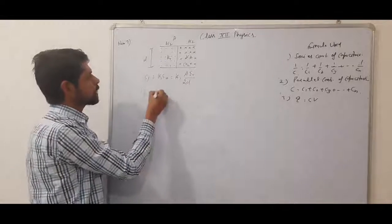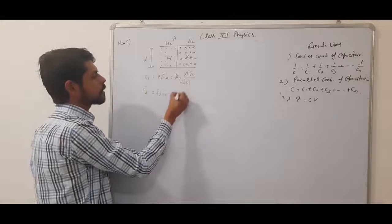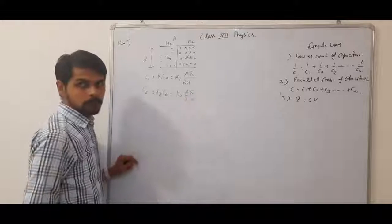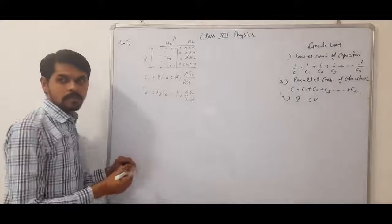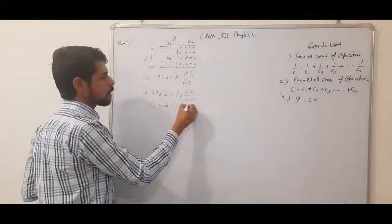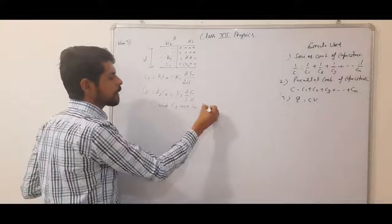C1 is K1 C0, which is K1 A by 2 epsilon naught by D. C2 is K2 C0, which is K2 A by 2 epsilon naught by D. Now C1 and C2 are in parallel.